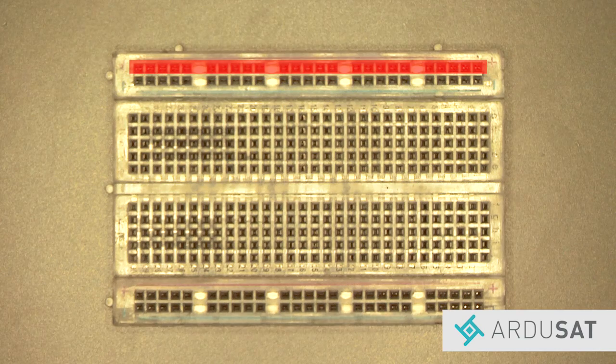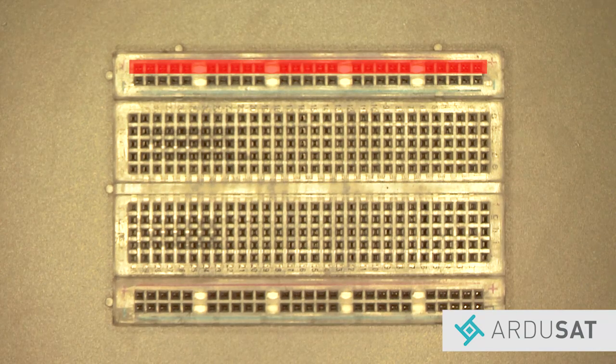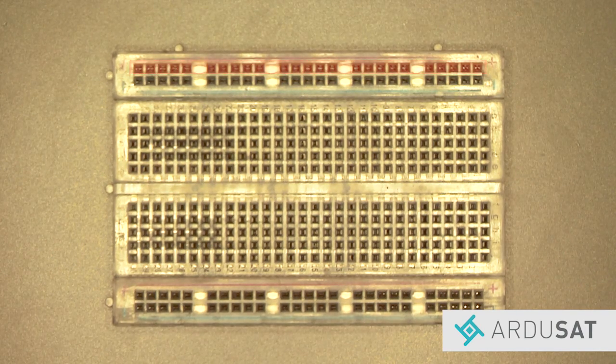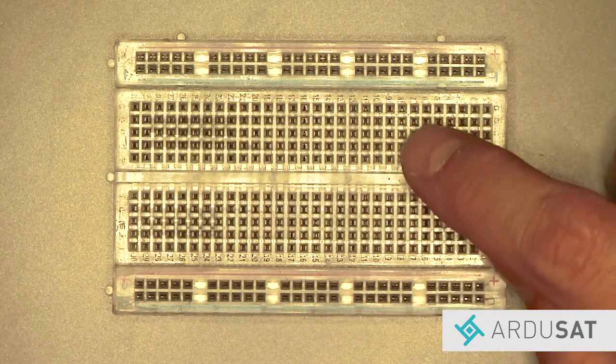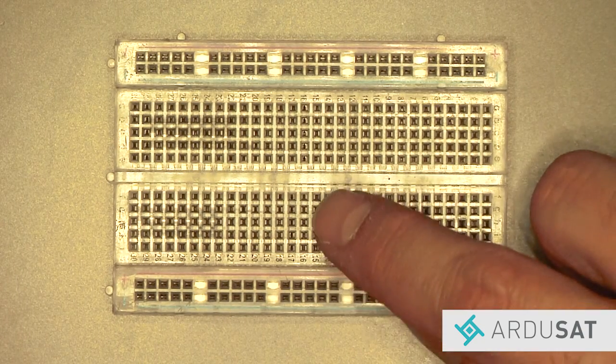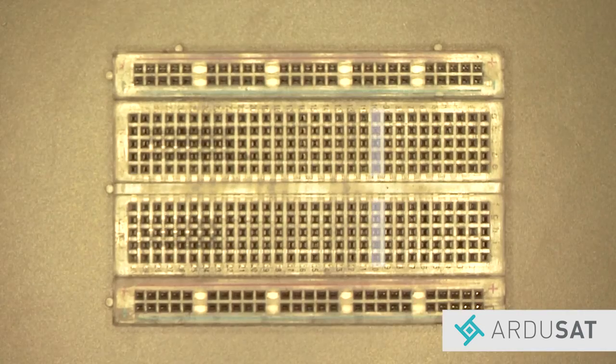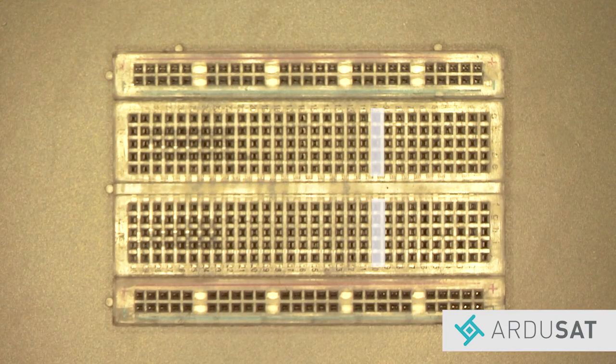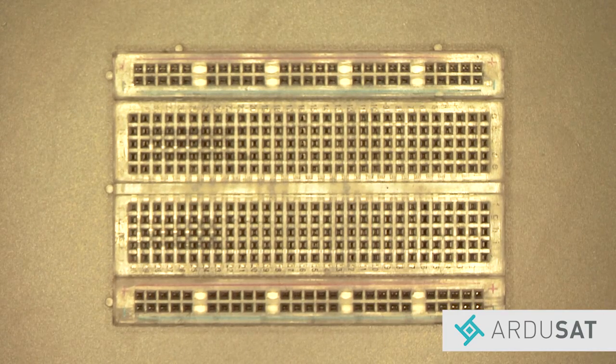Notice how the rails are all connected. This means that you can connect anywhere in the rail to connect to power. There are also columns and rows in the middle of the breadboard. The rows are split down the middle and are connected to each other but divided down the center. The columns are not connected to anything.